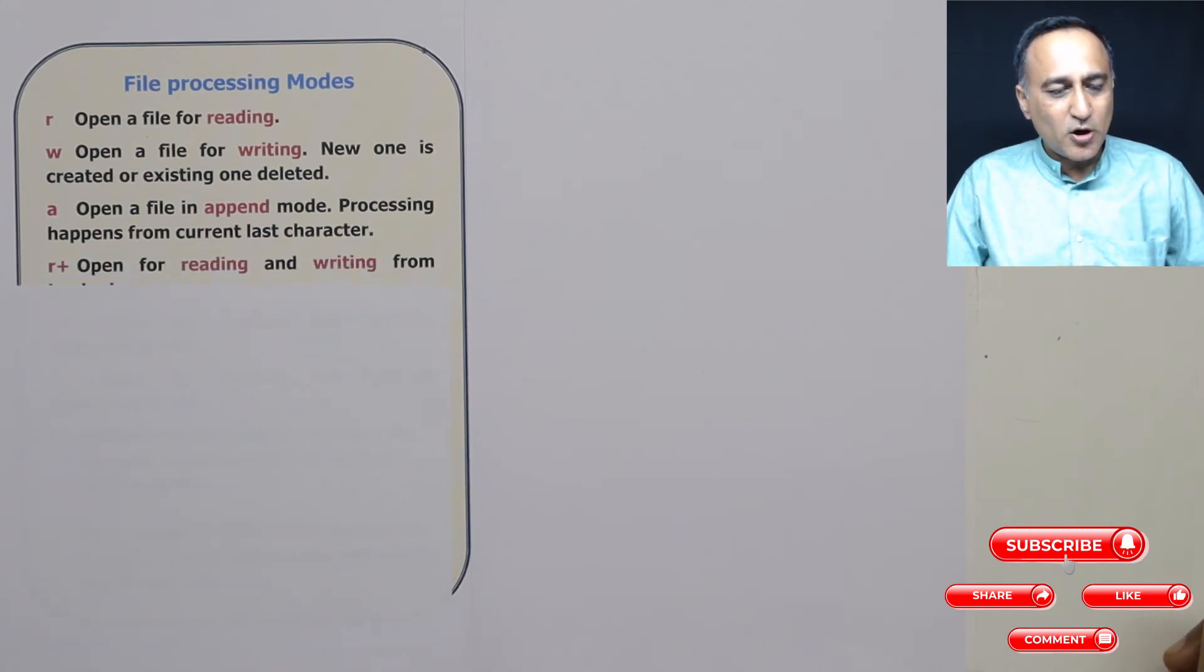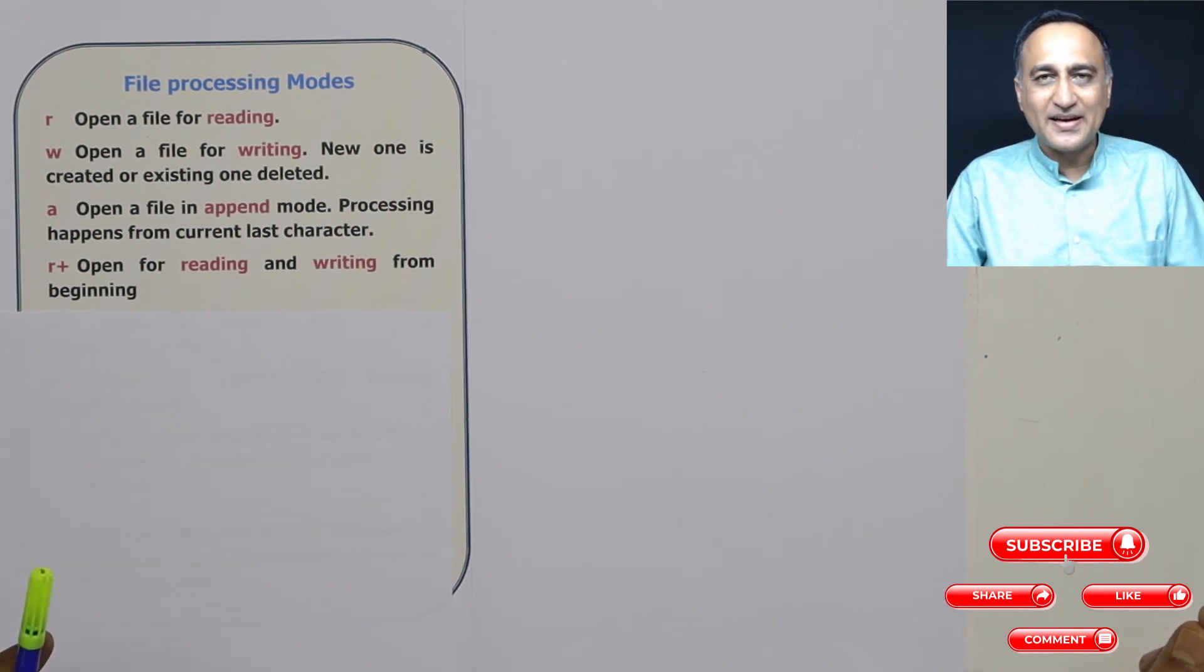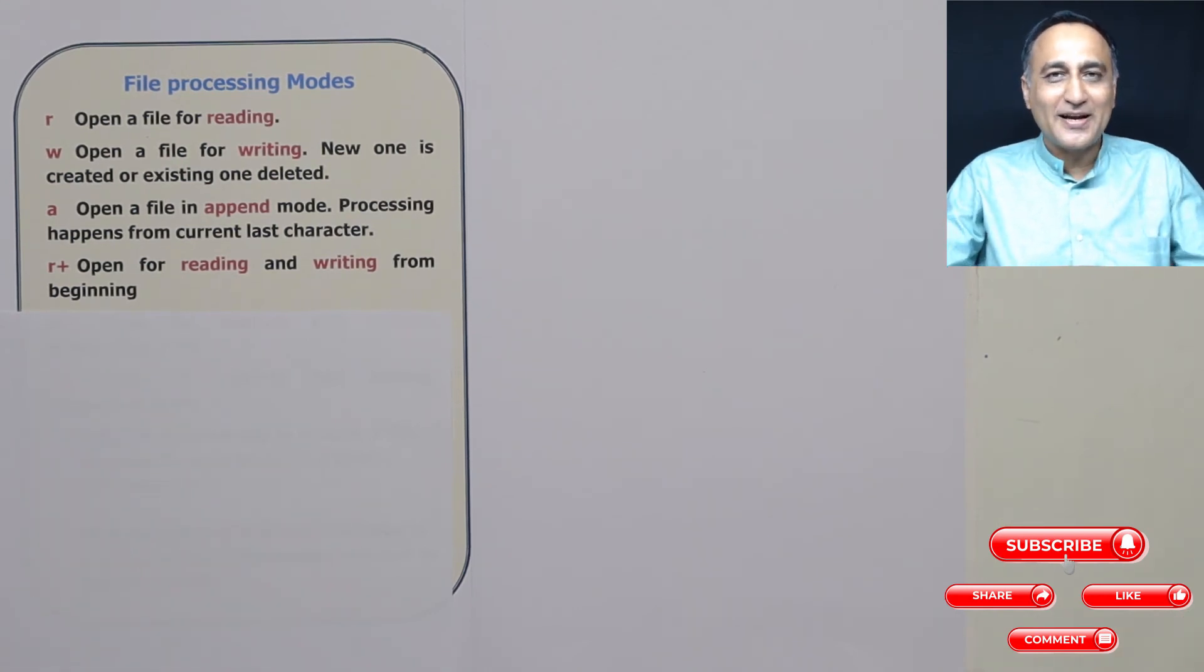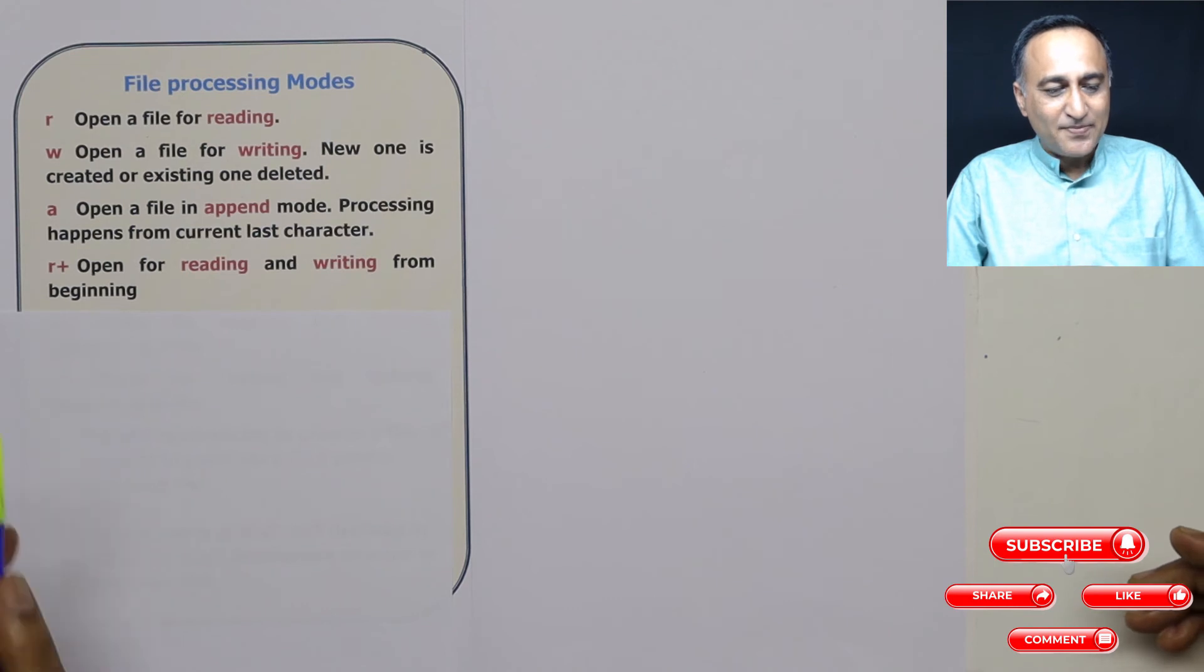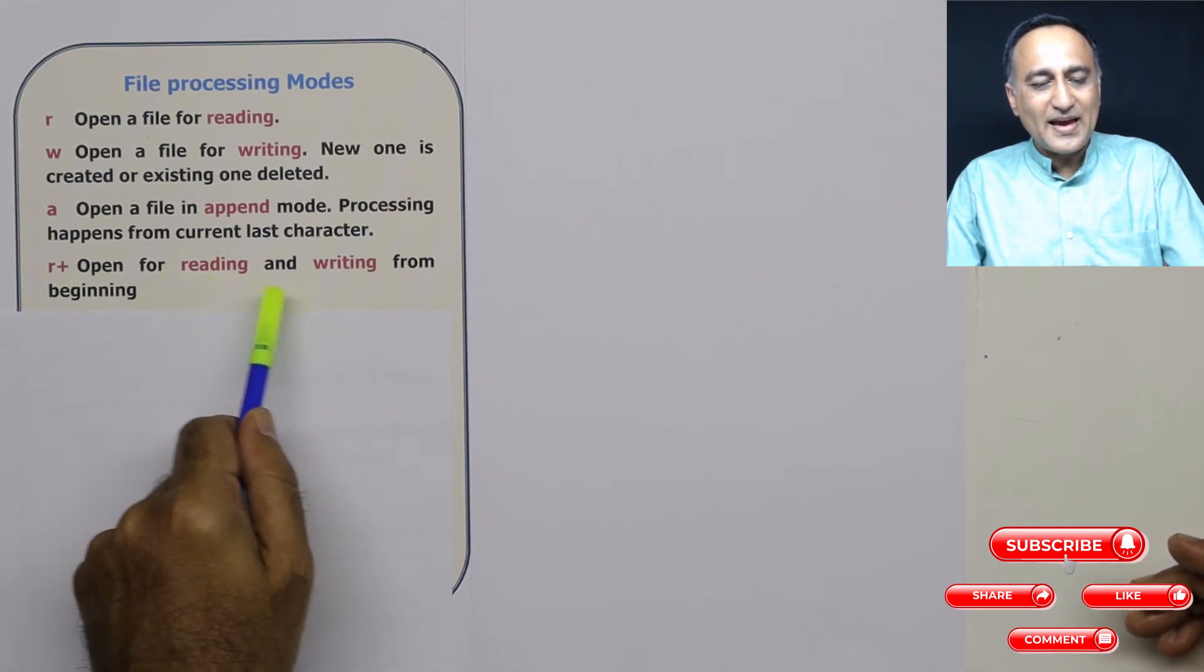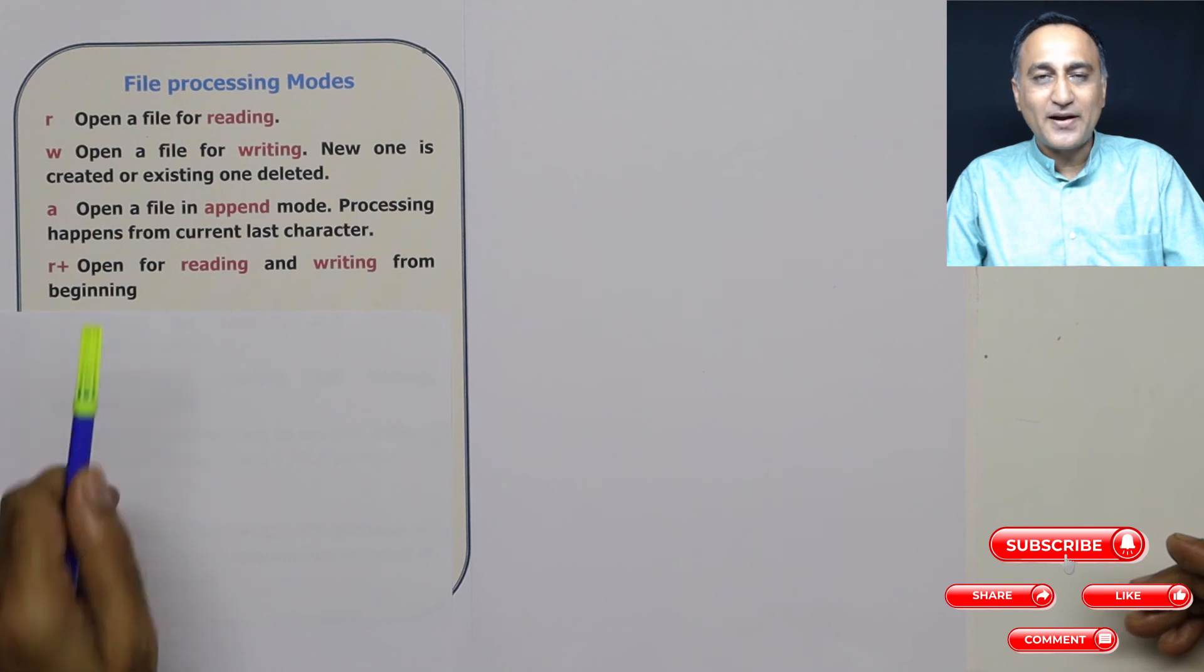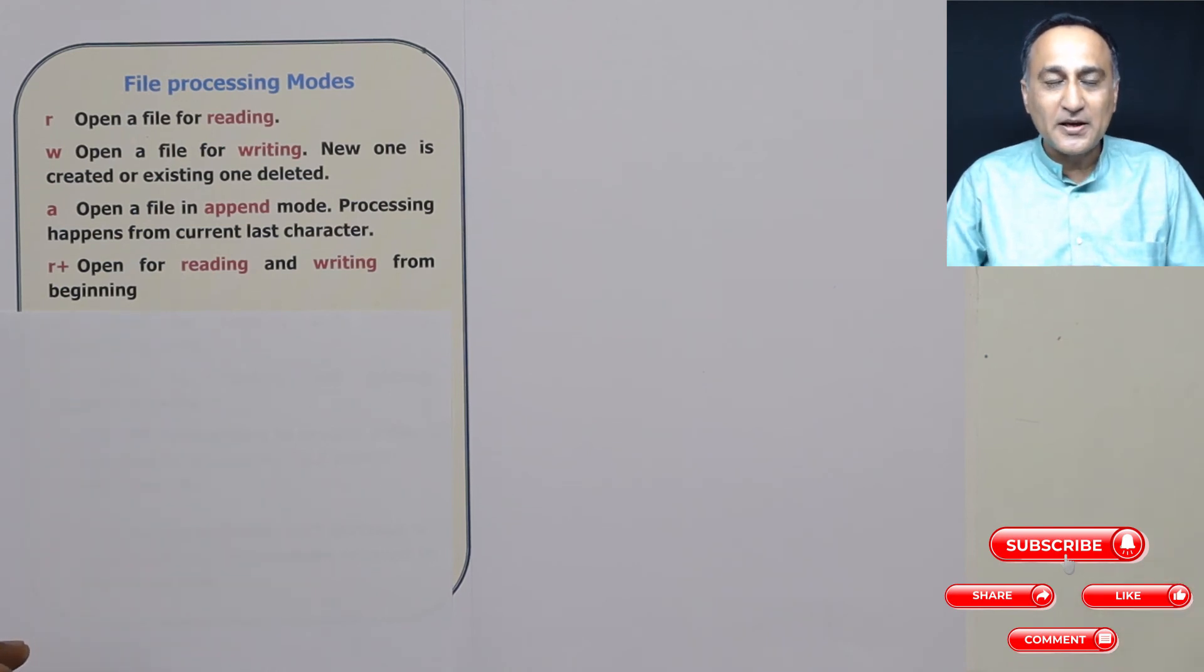Now there are small variations on read and write. When you say you're opening a file in R plus mode, it assumes that the file exists on the disk. If the file does not exist, you will again get a null being returned by the fopen function, which is going to tell you file cannot be created or a file cannot be read because it does not exist. The advantage of R plus mode is you can read as well as write from the file starting from the beginning, but the file should already exist.